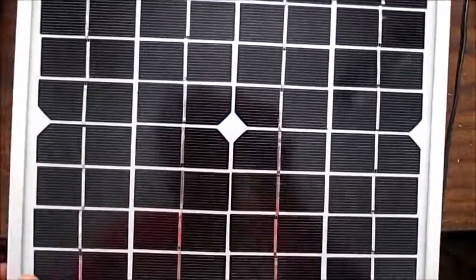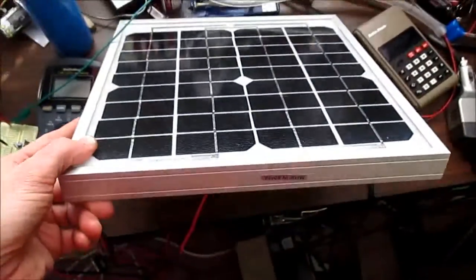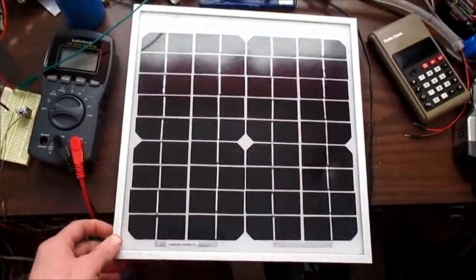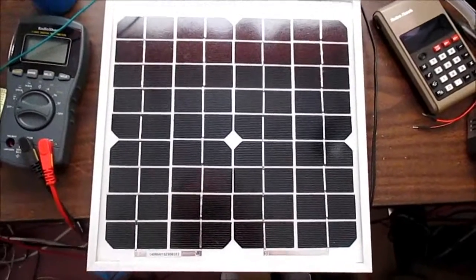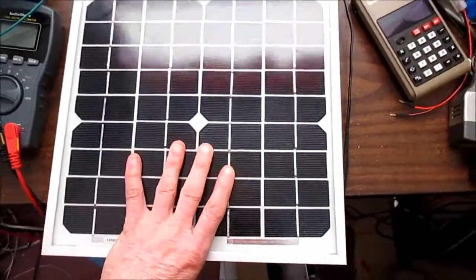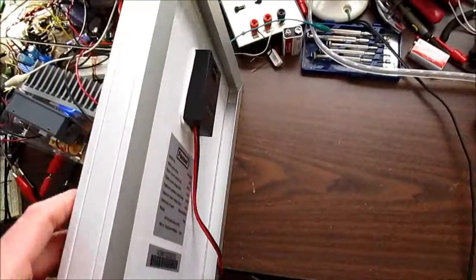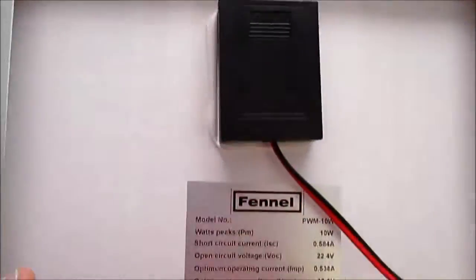It's your typical solar panel, just a small size. It's a little less than a foot in each direction, about 30 centimeters. It has the little aluminum frame and the junction box on the back.